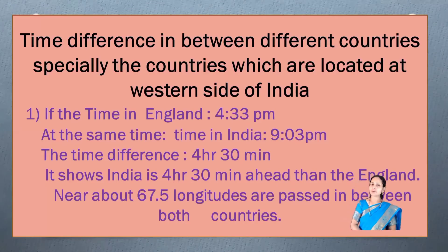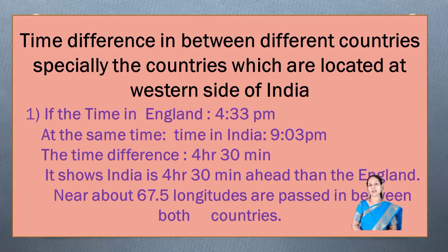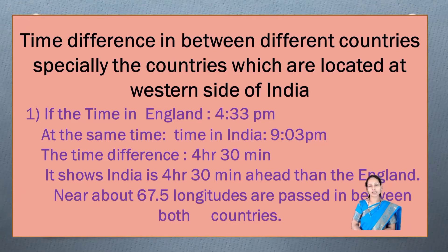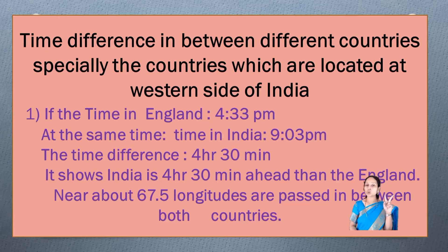The difference between different countries — especially the countries located to the western side of India. If the time in England is 4:33 pm, at the same time the time in India is 9:03 pm. The time difference is 4 hours 30 minutes. This shows India is 4 hours 30 minutes ahead of England. Near about 67.5 longitudes pass in between both countries.